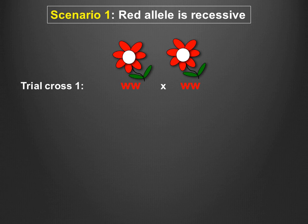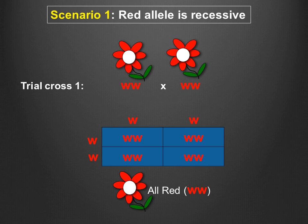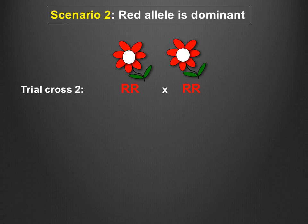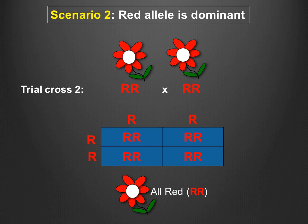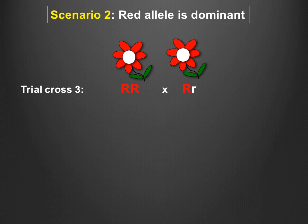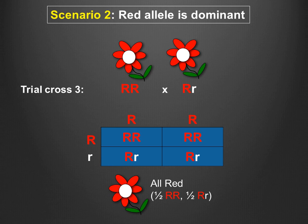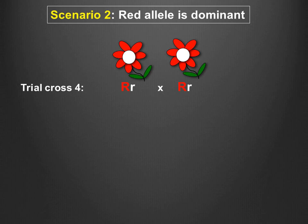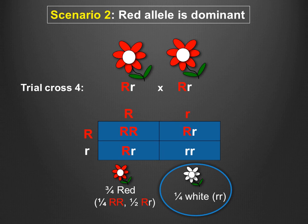In the scenario that the red allele is recessive, crossing two red-flowered plants would produce offspring that are all red-flowered. In the scenario that the red allele is dominant, a cross of two homozygous dominant plants again produces all red-flowered offspring. A cross of a homozygous dominant and a heterozygous plant also produces all red-flowered offspring. Finally, a cross of two heterozygous plants would result in three-fourths of the offspring being red-flowered and one-fourth being white-flowered.